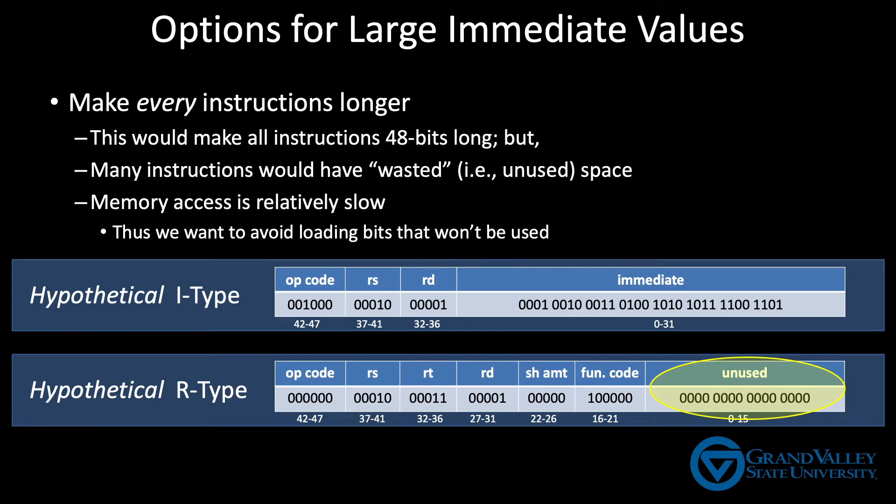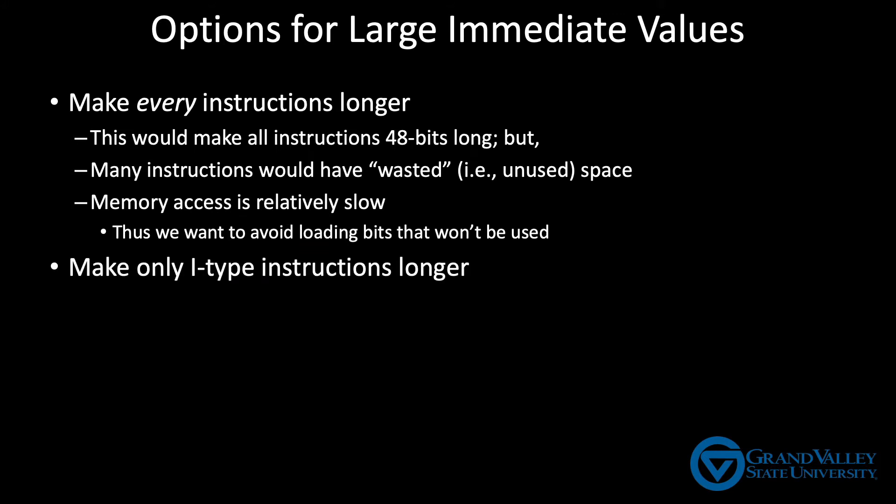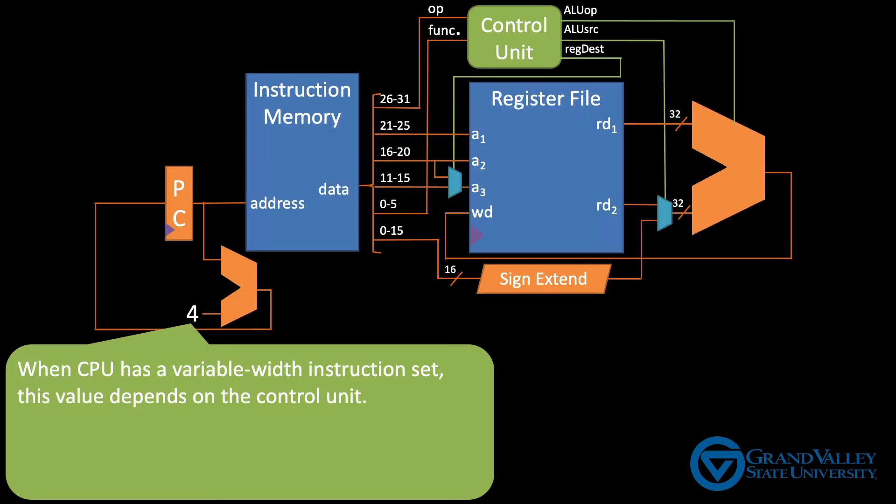The second option would be to make only the I-Type instructions 48 bits long and to keep the other instructions at 32 bits. This would address the wasted memory concern, but it would add complexity to the CPU because now the amount the program counter is incremented by would depend on the instruction, which means the control unit would have to compute this value before we can increment the program counter.